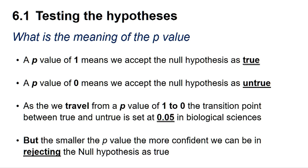A p-value of 1 means we accept the null hypothesis as true, whereas a p-value of 0 means we accept the null hypothesis as untrue. As we travel from a p-value of 1 to 0, the transition point between true and untrue is set at 0.05 in biological sciences. The smaller the p-value below 0.05, the more confident we can be in rejecting the null hypothesis.